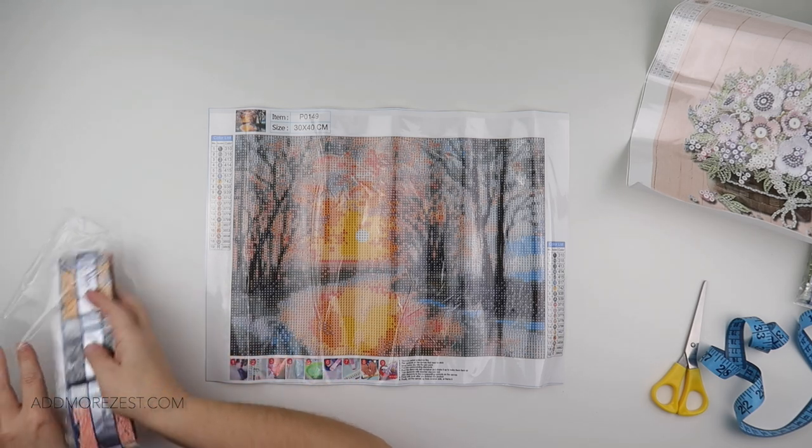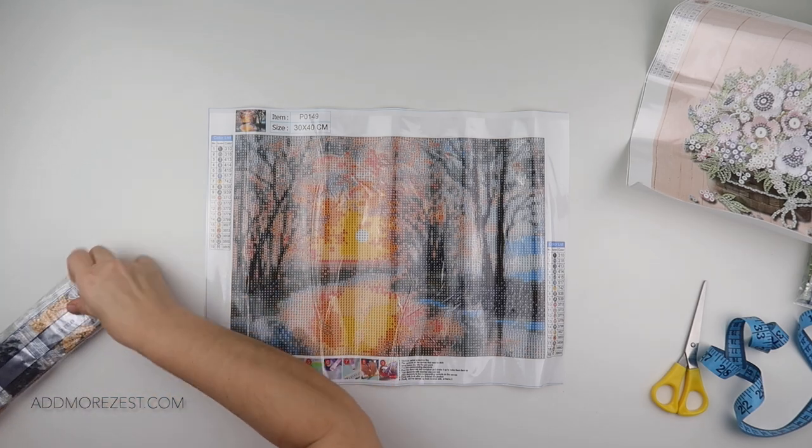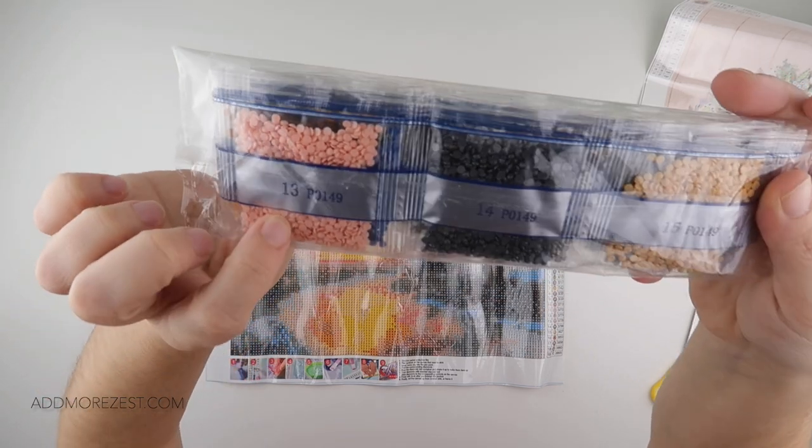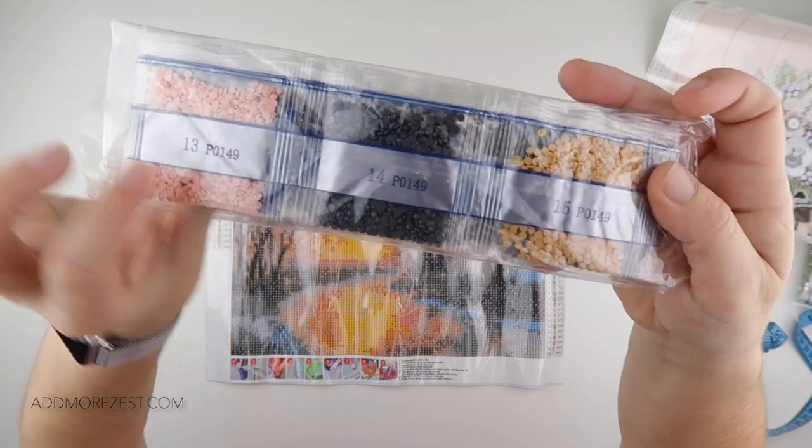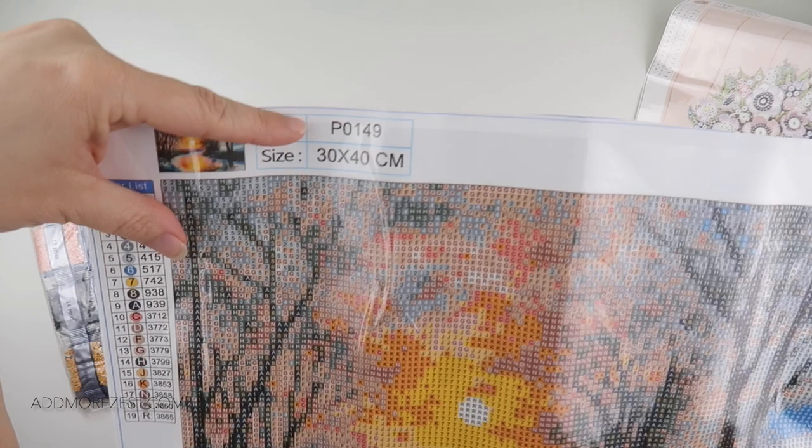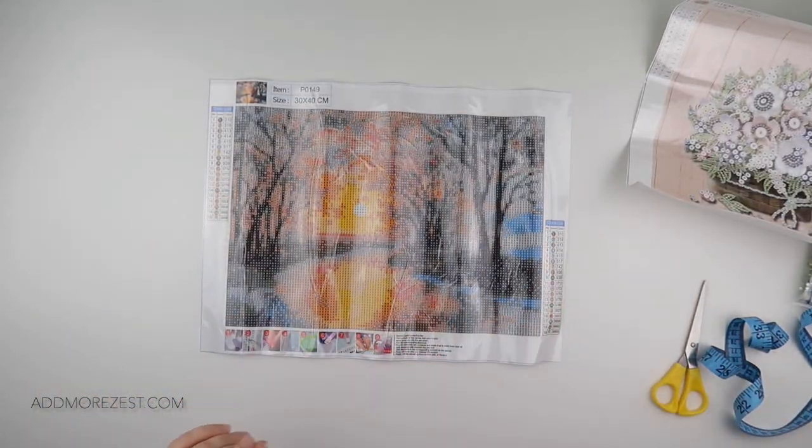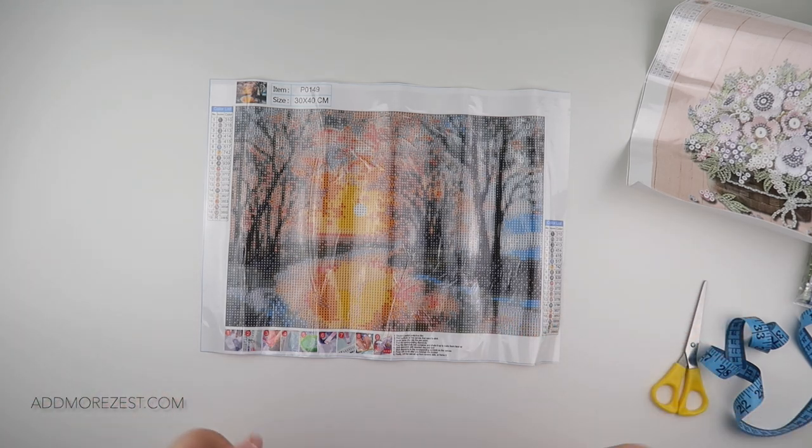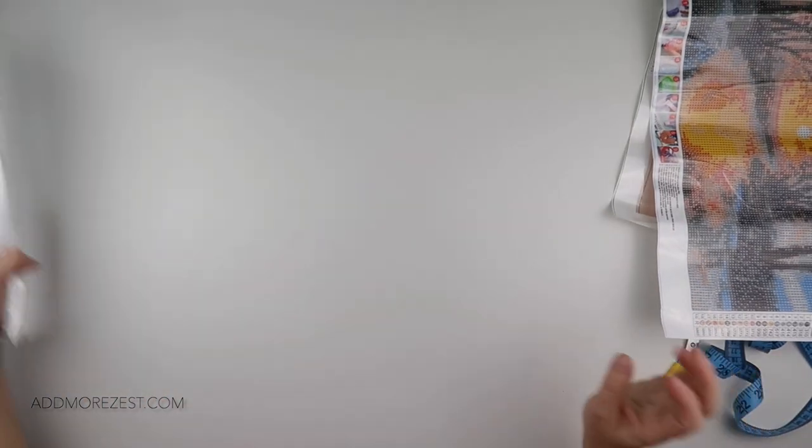Because they do, so you do tend to find that the diamonds do come with a code on them, so you can see this one has got P0149, and then it's got 13, 14, 15. P0149 is the reference to their code for the painting. But every now and then it's just sometimes just easier to put the diamonds away than get my little books. So that's painting number two.